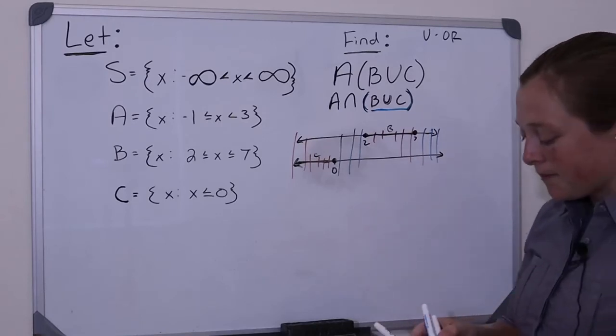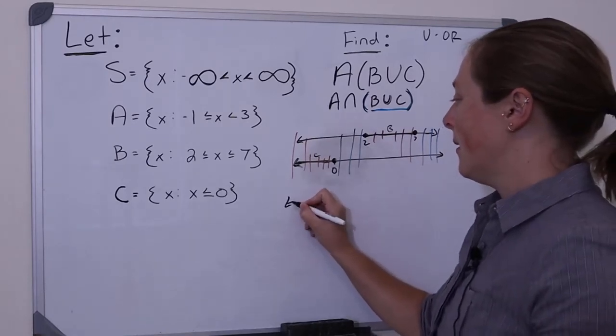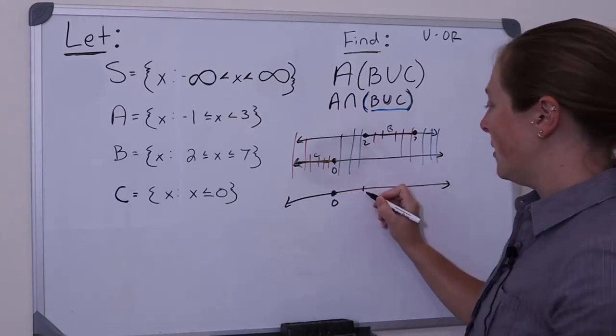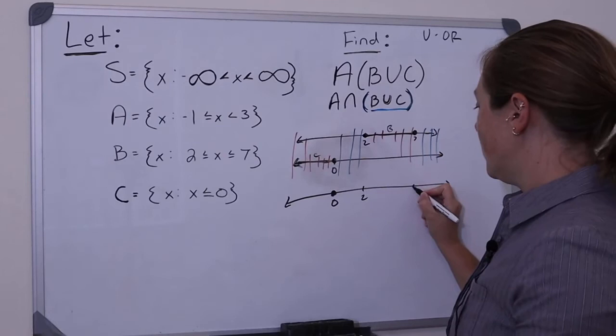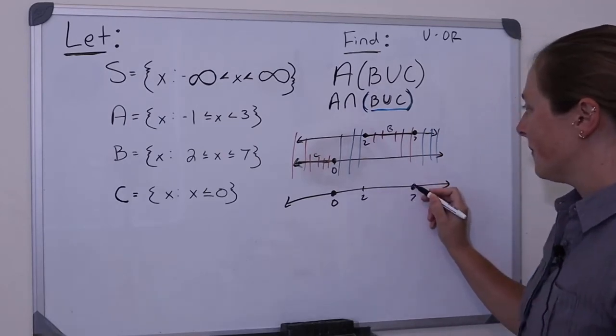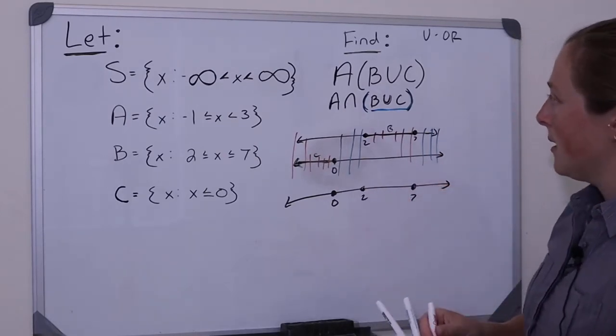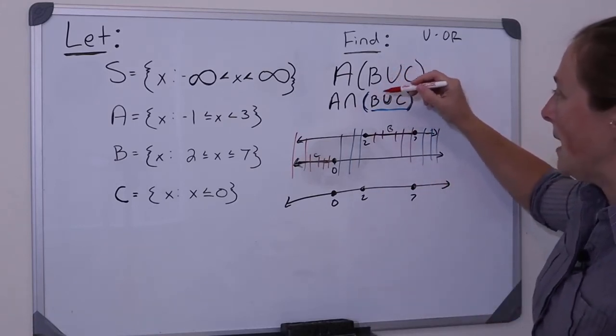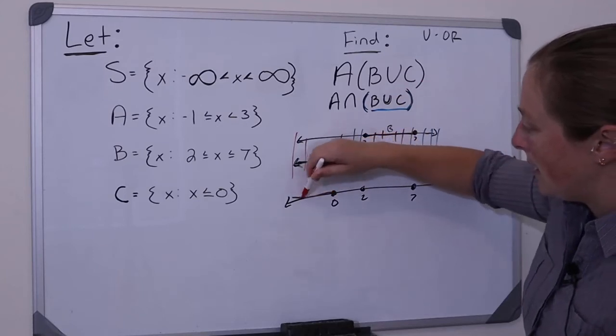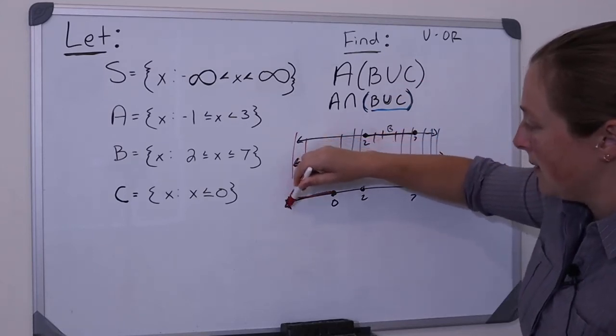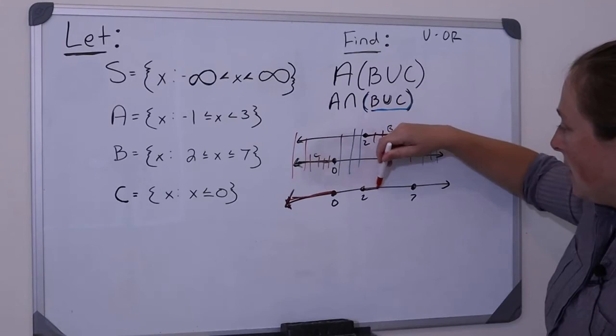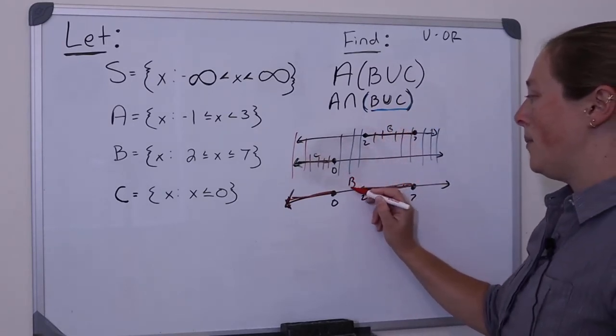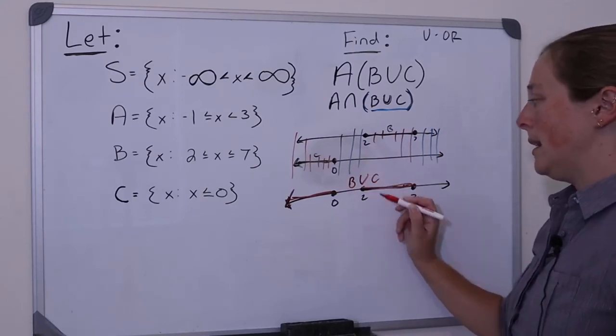So where is my intersection? Let's draw this here. My intersection then, if I have 0, 2, and 7. B intersection, or sorry, B union C would be down here, between the two, and then that's it. So this is where B union C is.